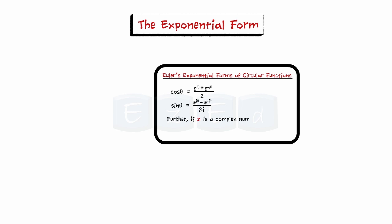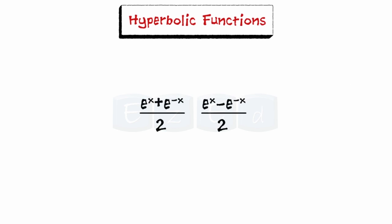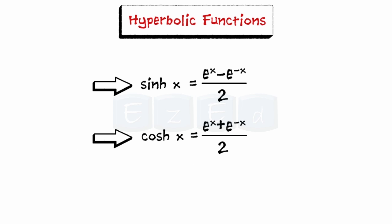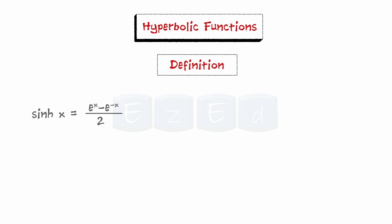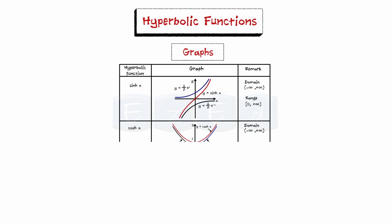Further, if z is a complex number, we define cos z = (e^(iz) + e^(−iz)) / 2 and sin z = (e^(iz) − e^(−iz)) / 2i. These functions are called hyperbolic functions. The first is the hyperbolic sine, pronounced as 'sinh', while the second is hyperbolic cosine, pronounced as 'cosh'. We define all hyperbolic functions as shown, and look at the graphs of sinh, cosh, and tanh.